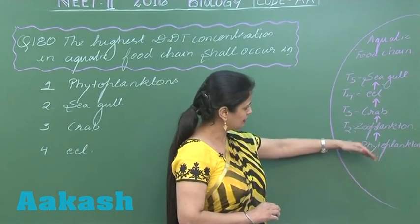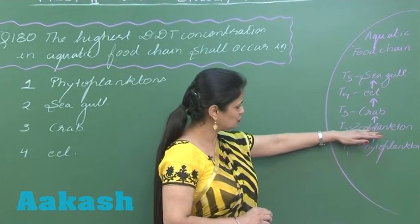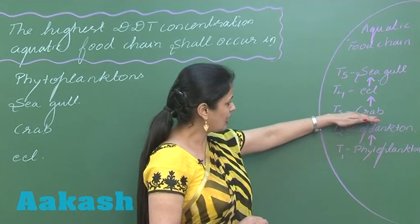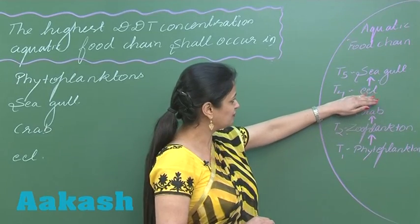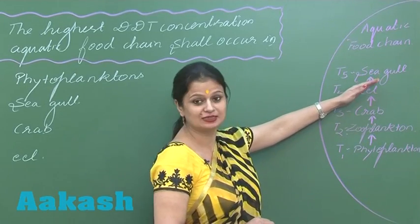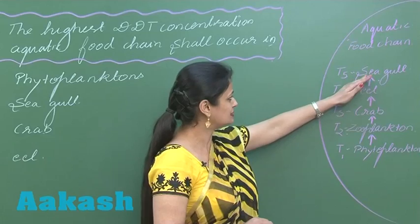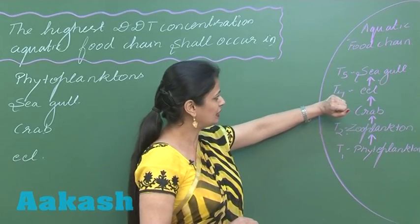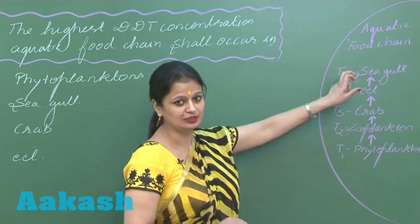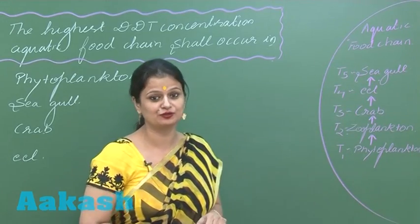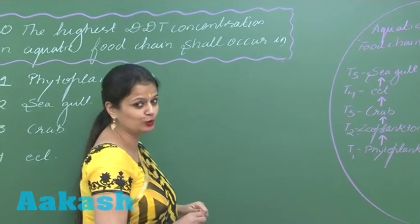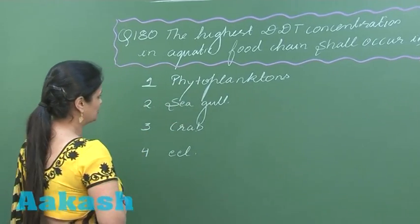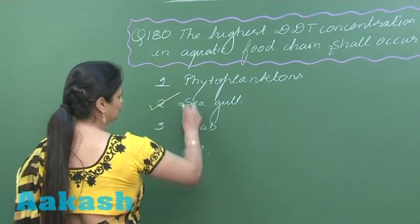Phytoplanktons are eaten by zooplanktons, zooplanktons are eaten by crabs, crabs are eaten by fish, and fish are eaten by the fish-eating bird — the seagull. The highest trophic level here is the seagull, so the maximum concentration of DDT would be observed at that level. The right option for this question is option number two.